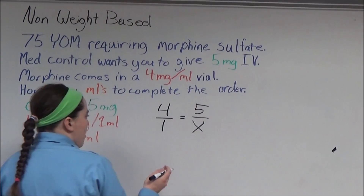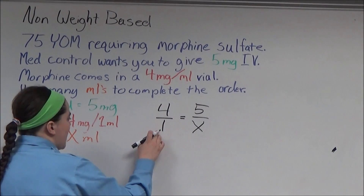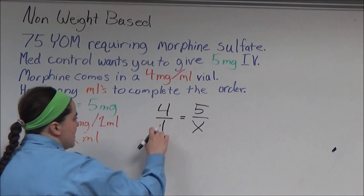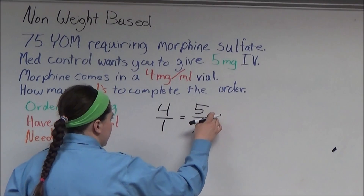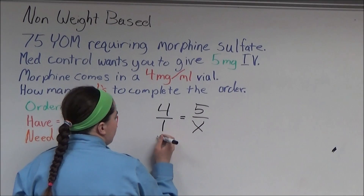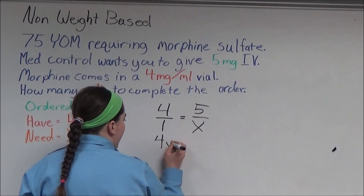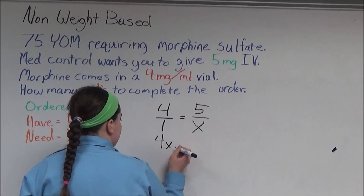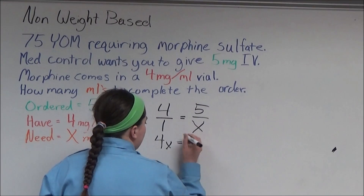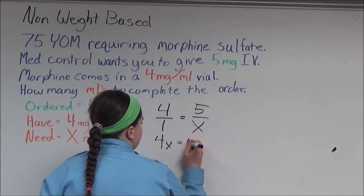Next, you cross multiply, which is where you multiply the bottom of one side of the equation times the top of the other. So 4 times x is 4x, and that's equal to 1 times 5, which is 5.